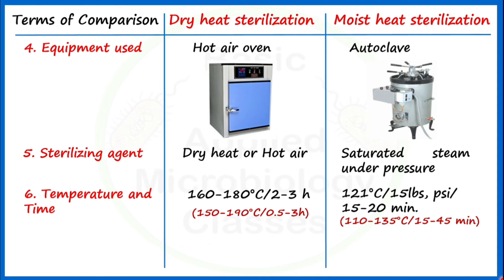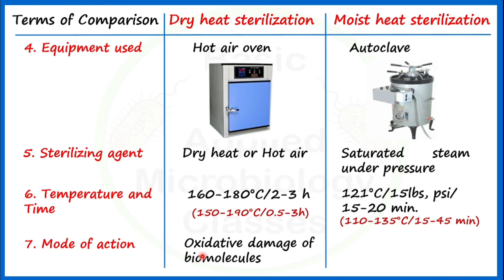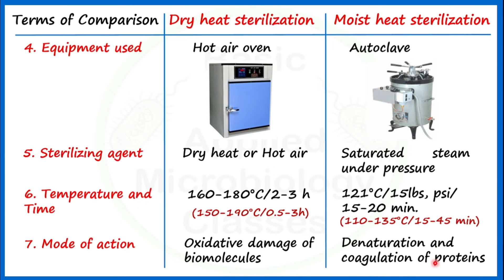The seventh point of difference is the mode of action — how each method results in killing of microorganisms. Dry heat, used in a hot air oven, causes oxidative damage of biomolecules, which results in killing of living entities. The autoclave results in denaturation and coagulation of proteins of microorganisms or any living entities, which leads to sterilization by moist heat.